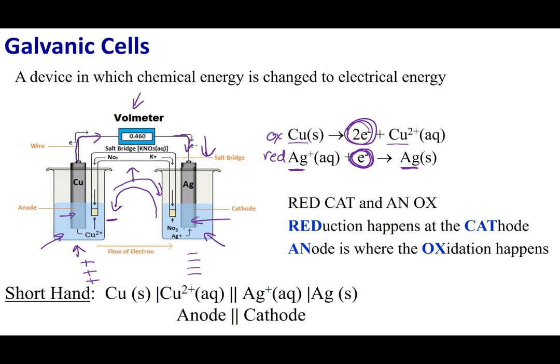For my salt bridge, what I chose here is I chose K plus to be my positive ions and NO3 minus to be my negative ions. Once I bring over one electron, I can bring anions to the other side and that way I don't build up charge. Once I do this, I complete my circuit and I will get electricity to flow from my copper side to my silver side.